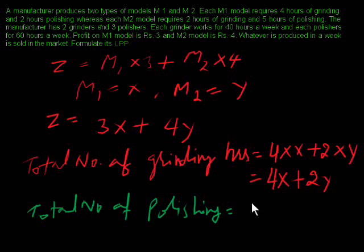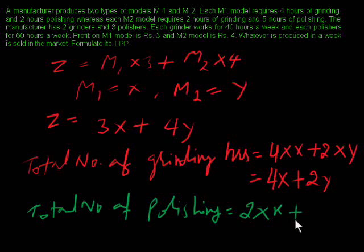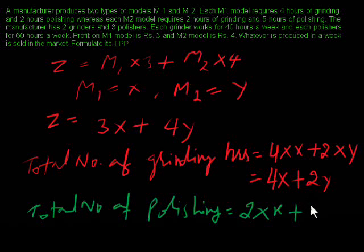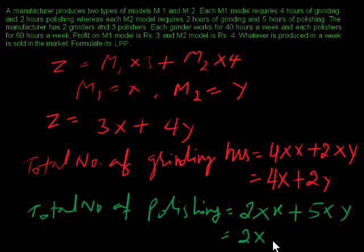For polishing, we take the number of units of model 1 times the hours per model 1, plus the number of units of model 2 times the hours per model 2. Model 1 needs 2 hours for polishing, so 2 times X, plus model 2 needs 5 hours, so 5 times Y. This gives the equation 2X plus 5Y.